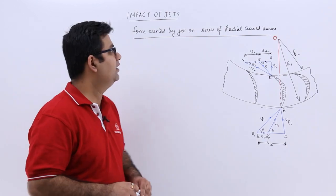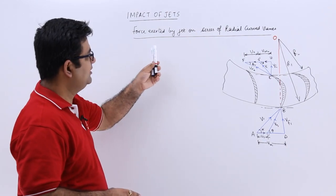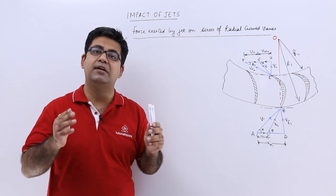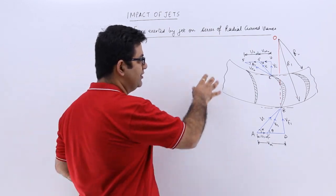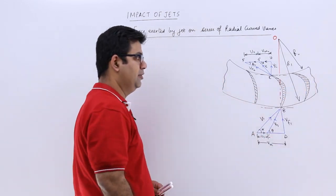Now let us start talking about the force exerted by a jet on a series of radial curved vanes. This is how a series of curved vanes would look like.